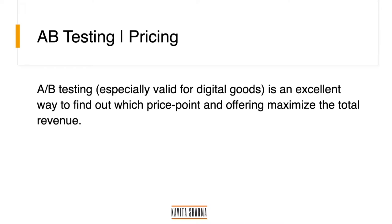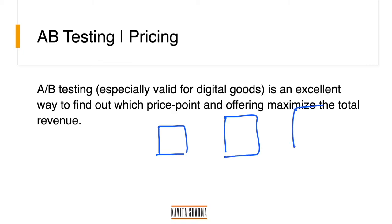You might be thinking pricing is very simple — people are going to select the lowest price — but that is not necessarily the case. Let me talk about a case study. This is a simple case study you may have seen yourself. At a movie hall, there are three sizes of popcorn tubs: small at $2.50, medium at $3.50, and large at $5.00. That was the original set of pricing.